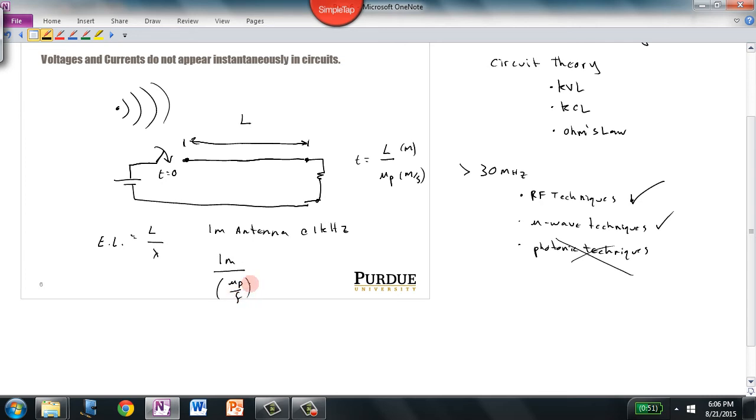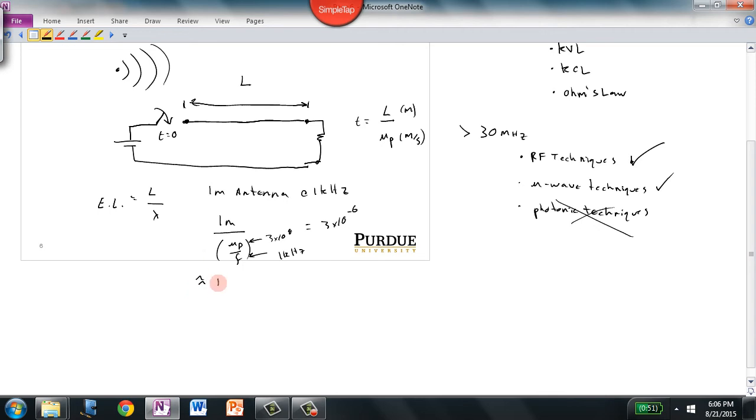If we plug in 3×10^8 and divide by 1k, the result is 3×10^-6. Therefore, a 1-meter antenna is 3×10^-6 wavelengths long at 1 kilohertz.